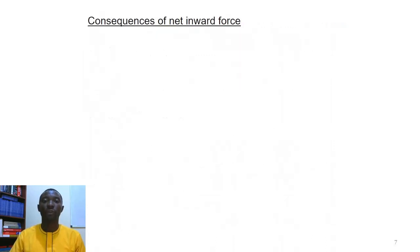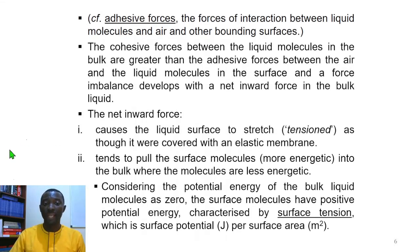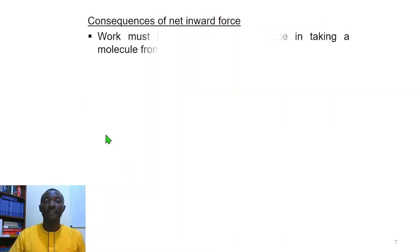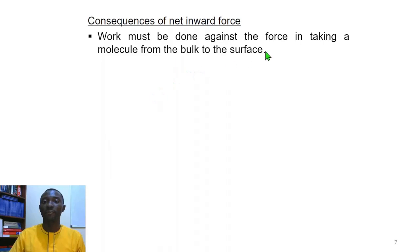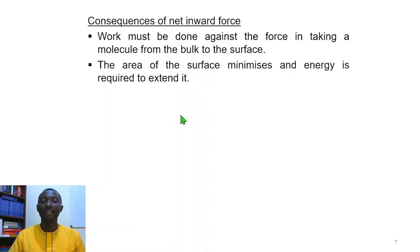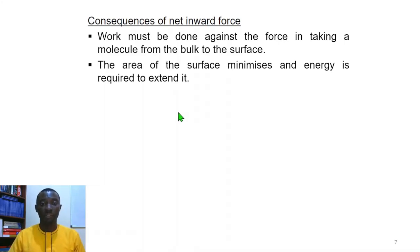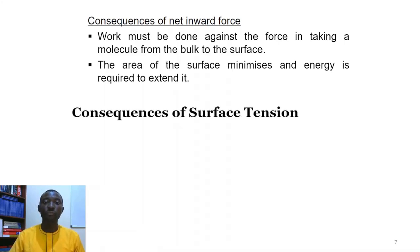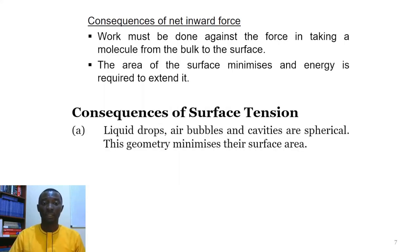What are the consequences of this net inward force? First, the net inward force results in surface tension. Second, work must be done against the force in taking a molecule from the bulk to the surface. Third, the net inward force causes the surface of the liquid to shrink, and energy is required to extend it. As a consequence of surface tension, liquid drops, air bubbles, and cavities are spherical — the geometry that minimizes the surface area.